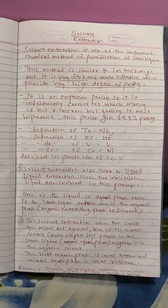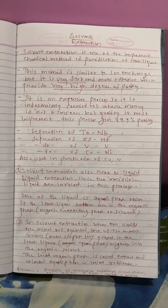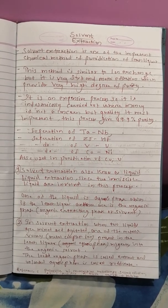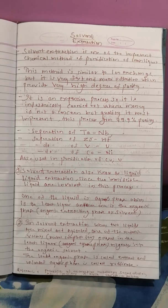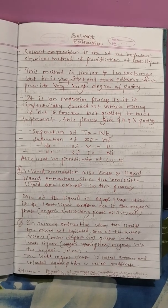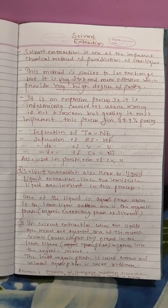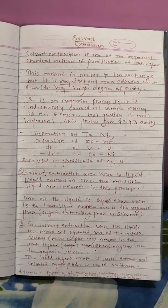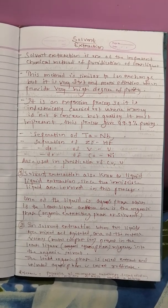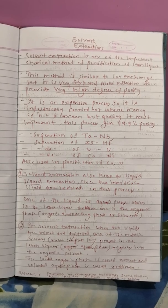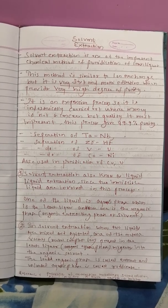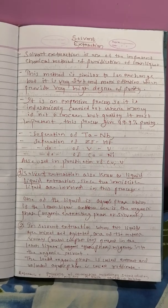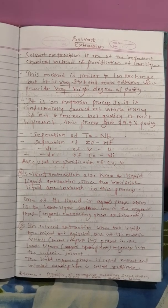Solvent extraction is one of the important chemical methods of purification of leach liquor. We can understand a situation where leaching of an ore gives rise to a leach liquor which contains one or more, two or more metallic values in the solution. In that case, purification is very essential before metal recovery process.